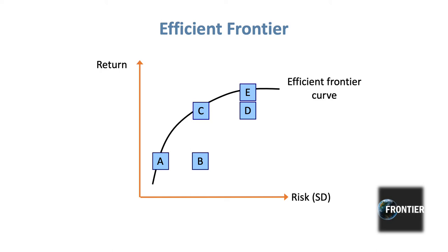The same logic applies to C and D, and D and E. C and D are horizontally on the same level — same returns — but C is further to the left, representing lower risk. D and E are vertically in line, same risk, but E achieved a greater return than D. Should you choose A, C, or E? Generally, that depends on the investor's appetite for risk: a lower-risk investor would choose A, medium risk perhaps C, and higher risk would choose E — though the efficient frontier typically shows investments within the same sector.